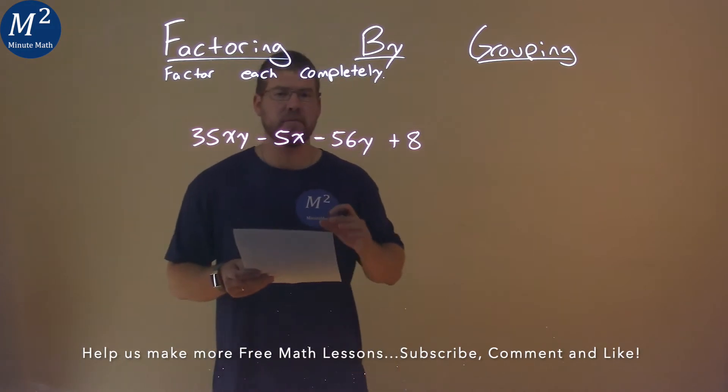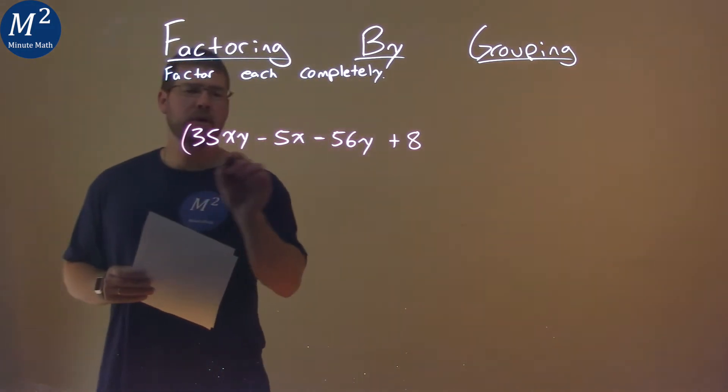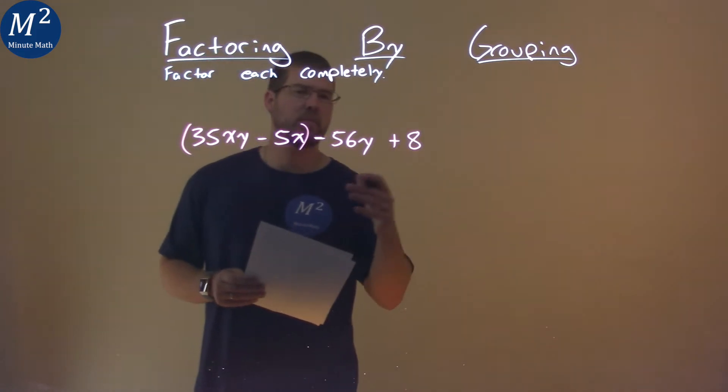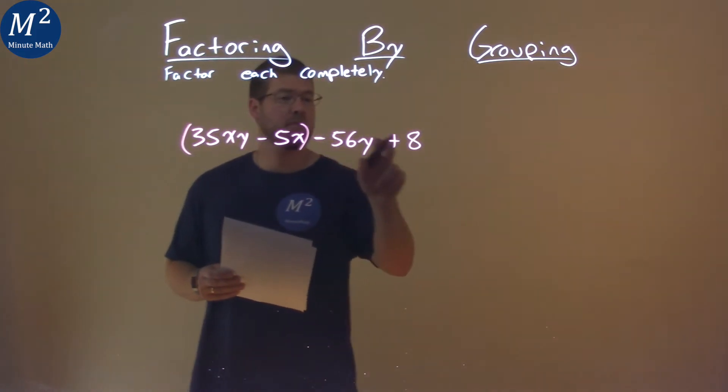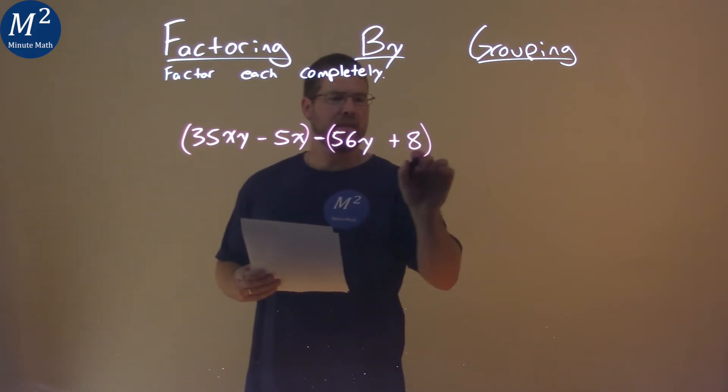My first step is to group the first two terms and the second two terms, but this becomes tricky. I can't just put a parenthesis here because there's that minus sign, and it would have to apply to both. So if I put a parenthesis here like this, the minus sign is supposed to be 56y, but we're adding an 8.